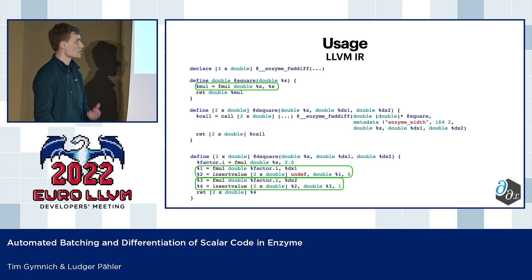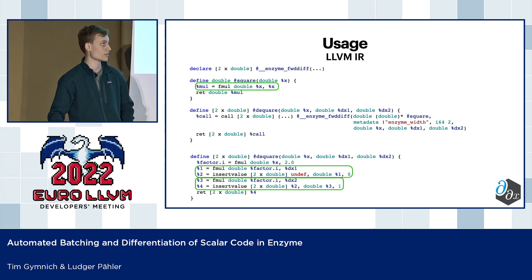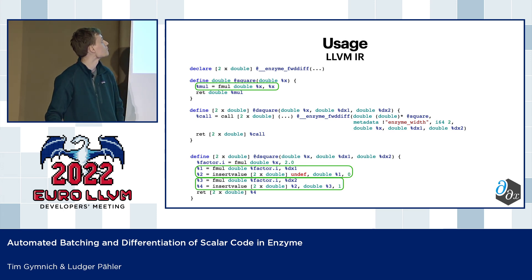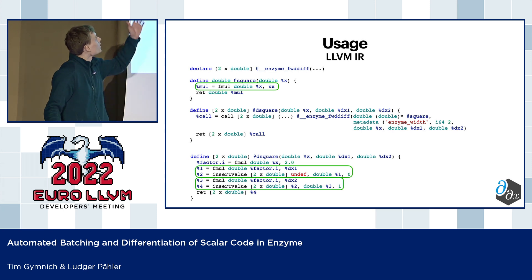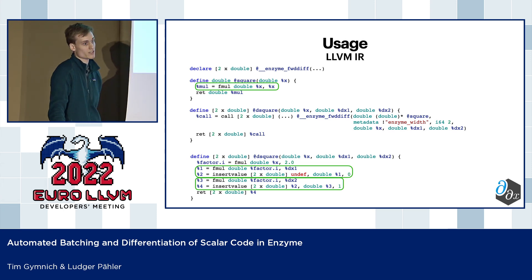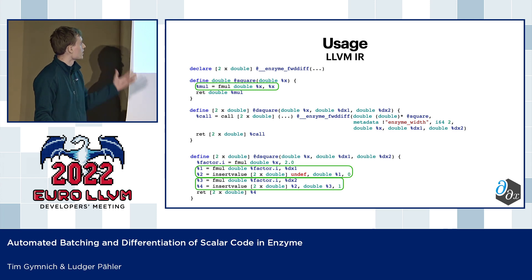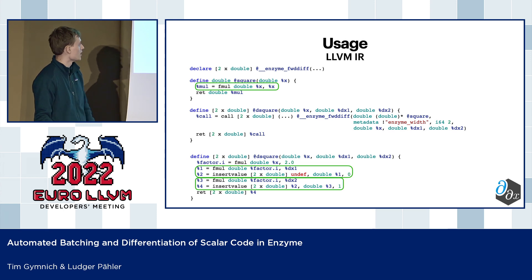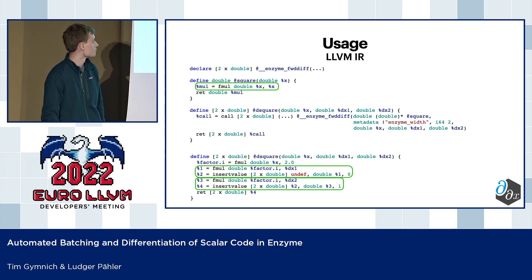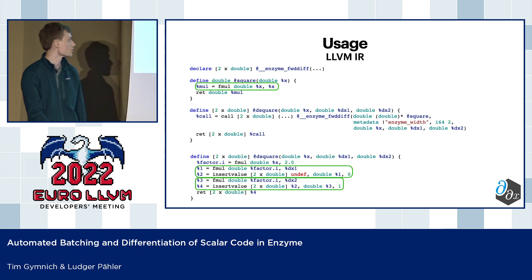Here's how this all looks in LLVM IR. Basically we have — this time we are computing X squared. We have our multiplication and the derivative. The chain rule is then applied two times, and we put this all in an array and return it.